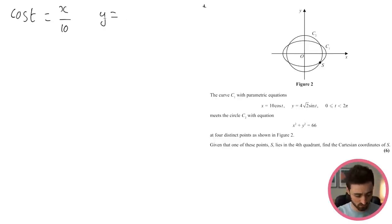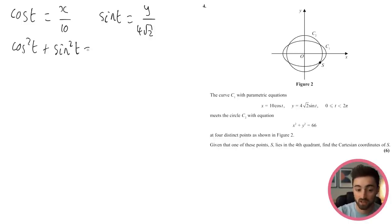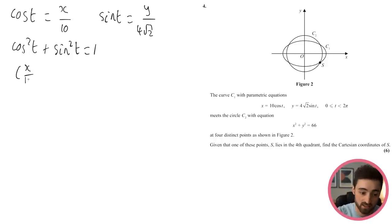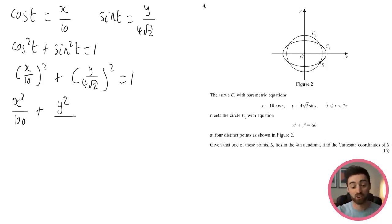From x = 10cos(t) we get cos(t) = x/10, and from y = 4√2 sin(t) we get sin(t) = y/(4√2). Using the identity cos²(t) + sin²(t) = 1, we get (x/10)² + (y/(4√2))² = 1, which gives x²/100 + y²/32 = 1. Squaring the denominator: 4² × (√2)² = 16 × 2 = 32. So the Cartesian equation of C1 is x²/100 + y²/32 = 1.